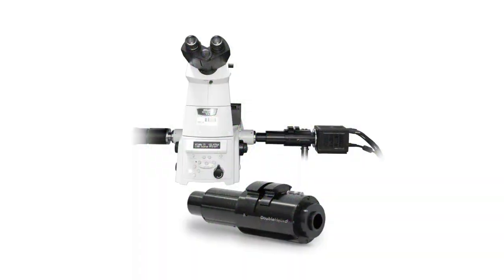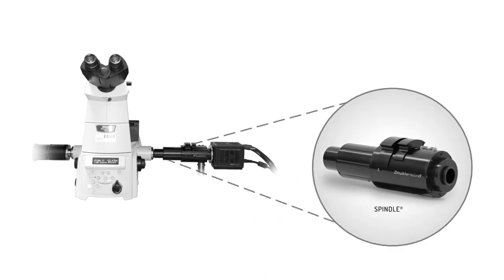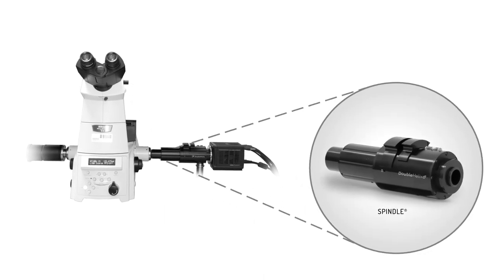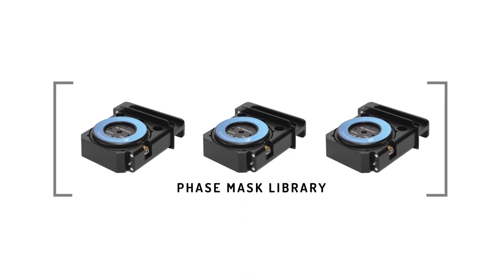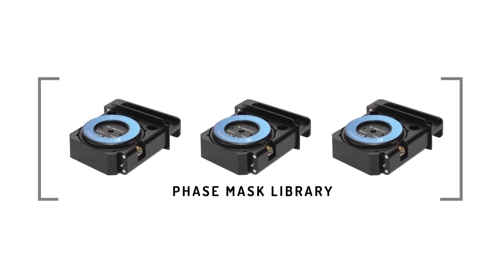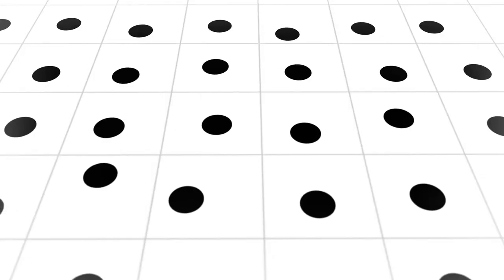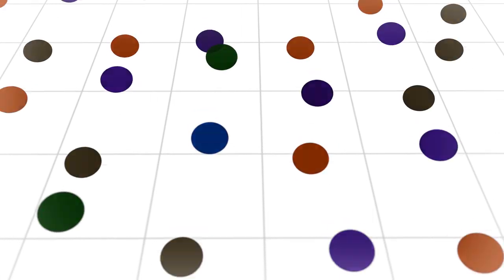The Double Helix Spindle 3D imaging system can be added onto any wide-field microscope with minimal setup. A library of user-changeable phase masks engineer the point spread function to convert 2D images into 3D information sets.